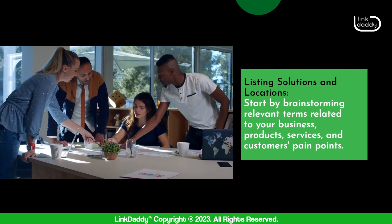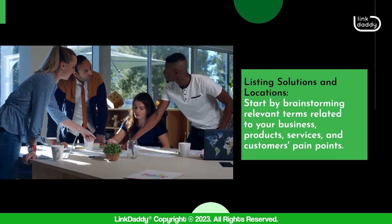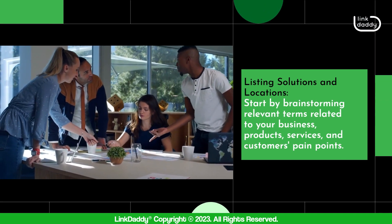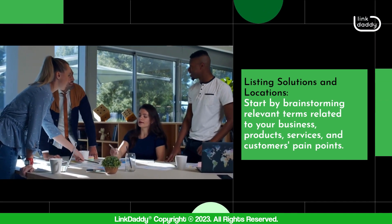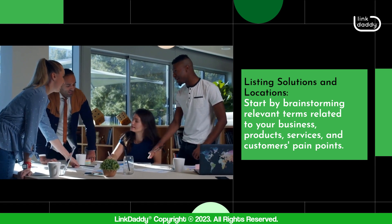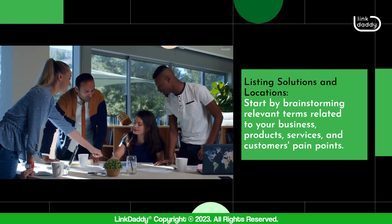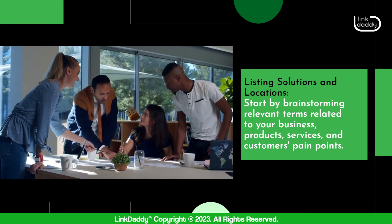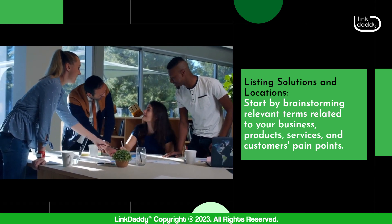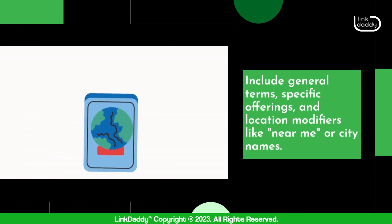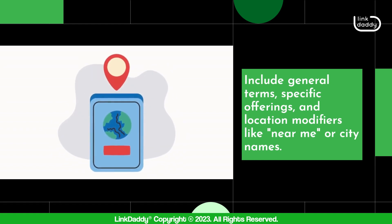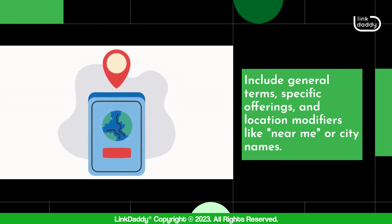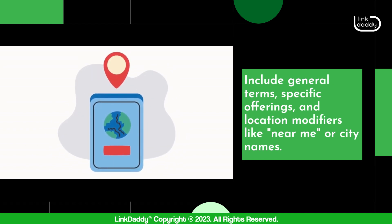Step one — listing solutions and locations: Start by brainstorming relevant terms related to your business, products, services, and customers' pain points. Include general terms, specific offerings, and location modifiers like 'near me' or city names.